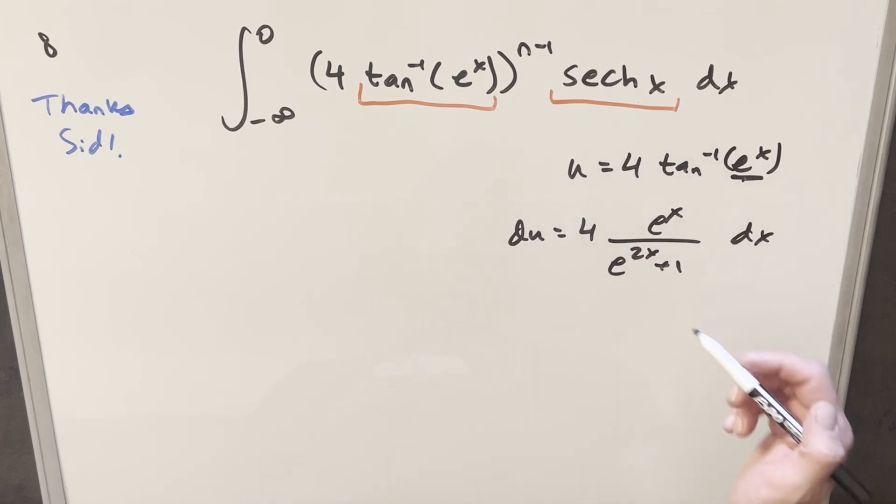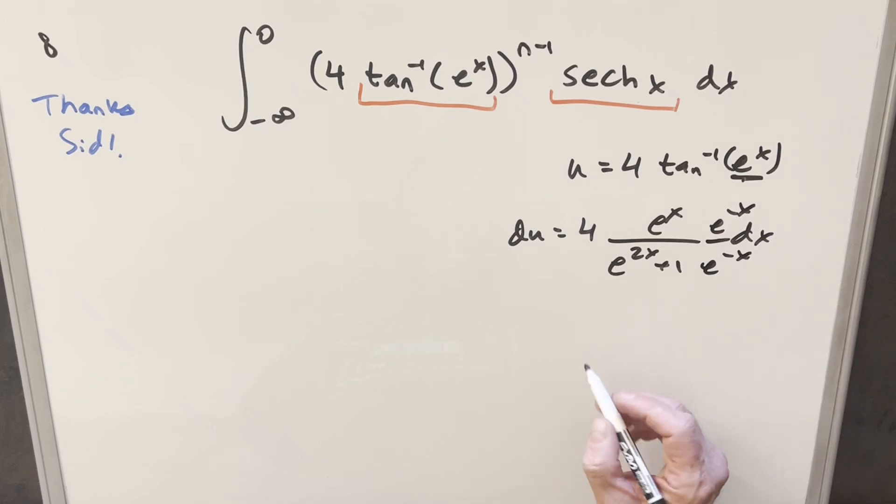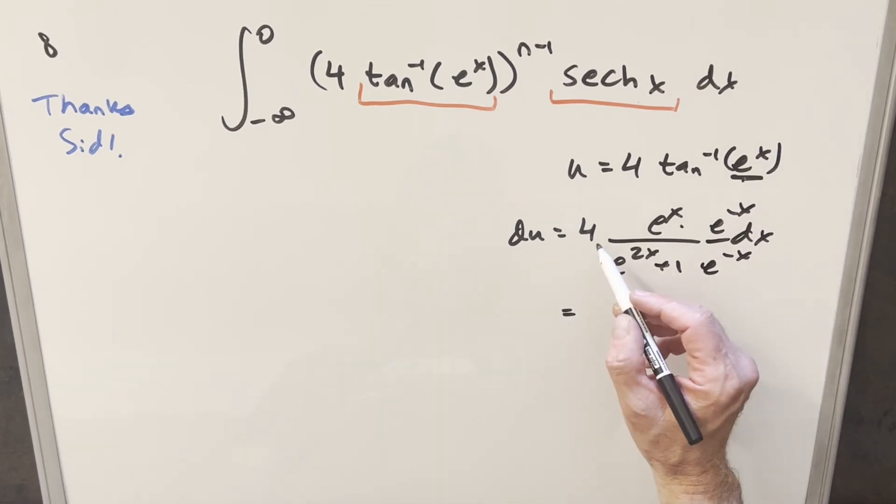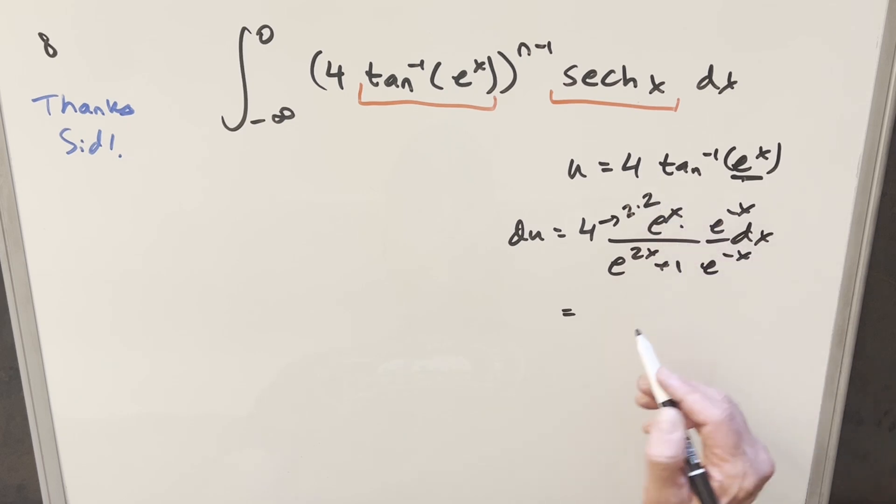I want to get the hyperbolic secant out of this, so what I'll do is multiply in numerator and denominator by e to minus x. That's going to clean this up. So first I think for this four I'm going to actually split this up and write it as two times two. I'm going to have one two in the front and then I'm going to bring two into the numerator here.